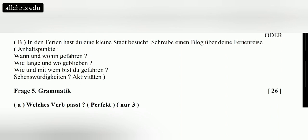For example from the question bank: on 'wann' write one sentence, on 'wohin gefahren' write one sentence, on 'wie lange' one sentence, on 'wo geblieben' one sentence, on 'mit wem bist du gefahren' one sentence, on 'Sehenswürdigkeit' one sentence, on 'Aktivitäten' one sentence. In one line they may give you two points together, or separate points like for 'mein Vater': Beruf one point, Alter one point.